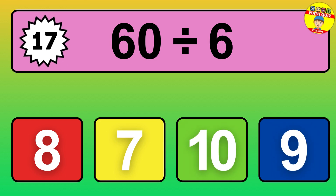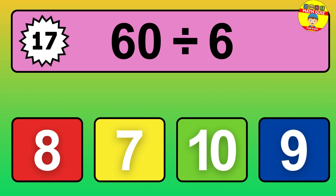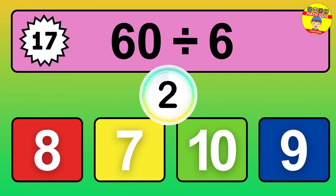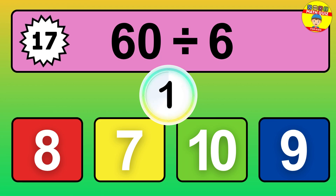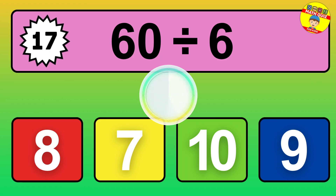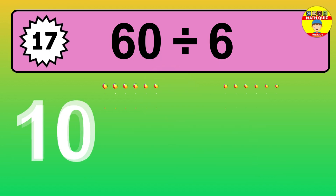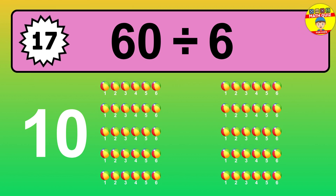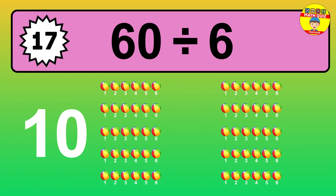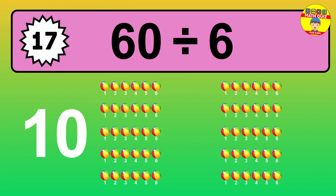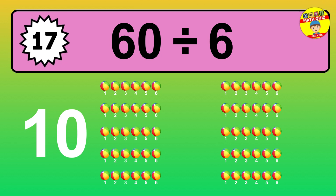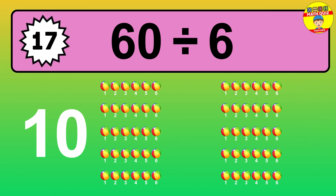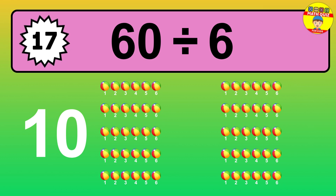What is 60 divided by 6? You have 60 objects that you need to divide into groups of 6. How many groups would you have? Let's think about it. Ready to find out? Let's break it down. Imagine you have 60 objects. Can you see them all lined up?